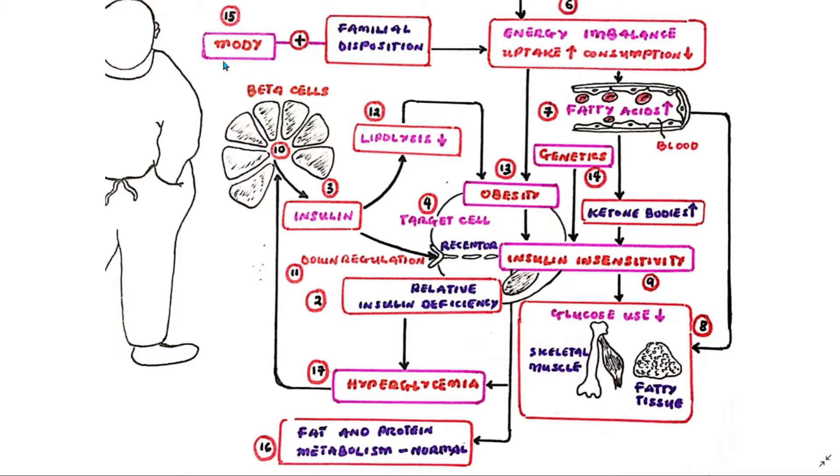If there is a strong genetic disposition, type 2 diabetes can already occur at a young age. This is called maturity onset diabetes of the young. Reduced insulin sensitivity predominantly affects glucose metabolism. However, normal fat and protein metabolism are well maintained.